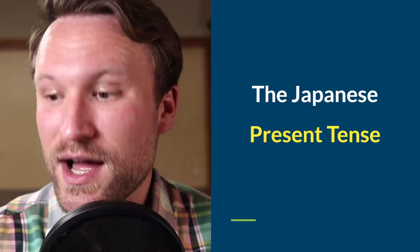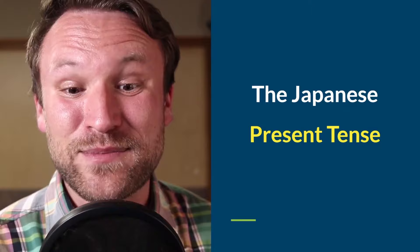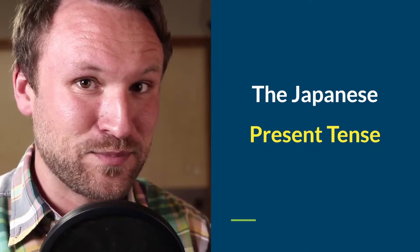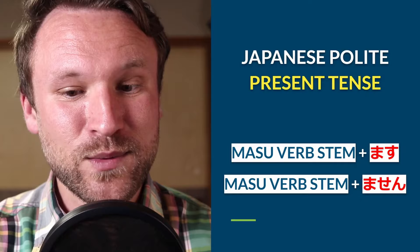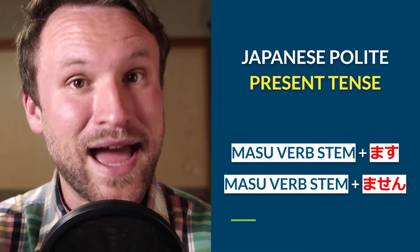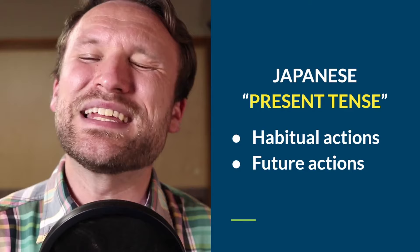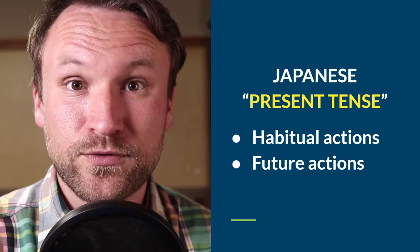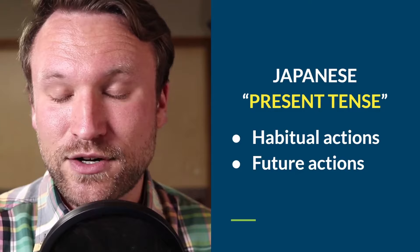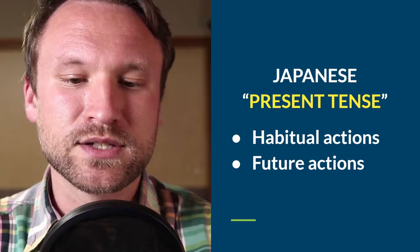That's how you conjugate verbs into their polite present tense and polite negative. Now let's look at how to actually use them. The Japanese present tense should really be in quotation marks, because what it actually covers is habitual actions or future actions — things just about to happen or off in the future. It is not used for ongoing actions. Just keep in mind: present tense = habitual or future.